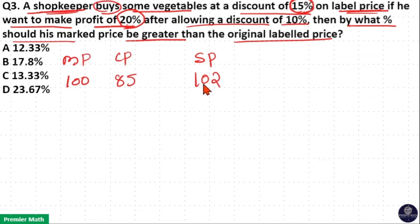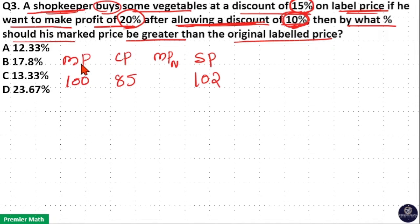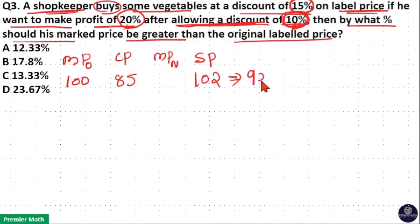But this 102 rupees is after allowing a discount of 10% on the label price. So there is a new MRP — that is the marked price new. Consider the original as the older marked price. This selling price of 102 is because of a 10% discount on the new MRP, so 102 is 90% of the new marked price.